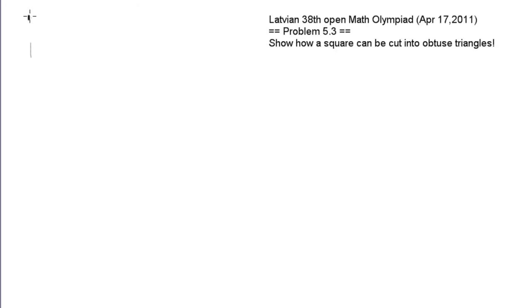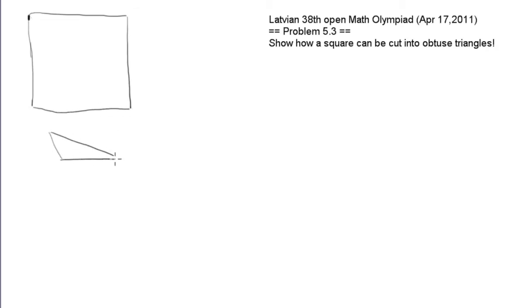In problem 3 for grade 5, we have a square and we have to cut it into many obtuse triangles — obtuse being a triangle having one angle larger than 90 degrees. Our first step is to cut the square into two equal isosceles triangles.